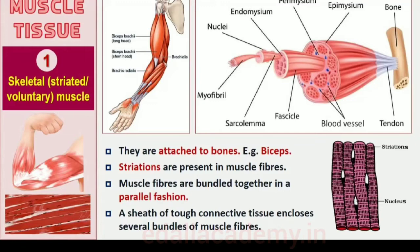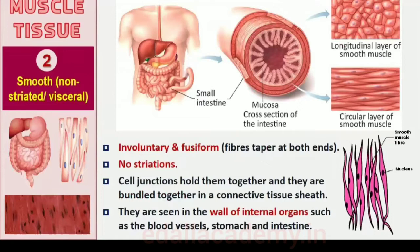The smooth muscle fibers taper at both ends, fusiform, and do not show striations. Cell junctions hold them together and they are bundled together in a connective tissue sheath. The wall of internal organs such as the blood vessels, stomach and intestine contains this type of muscle tissue. Smooth muscles are involuntary as their functioning cannot be directly controlled — we are usually not able to make them contract merely by thinking about it, as we can do with skeletal muscles.